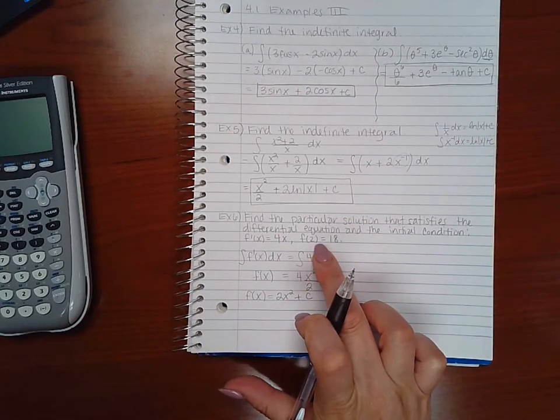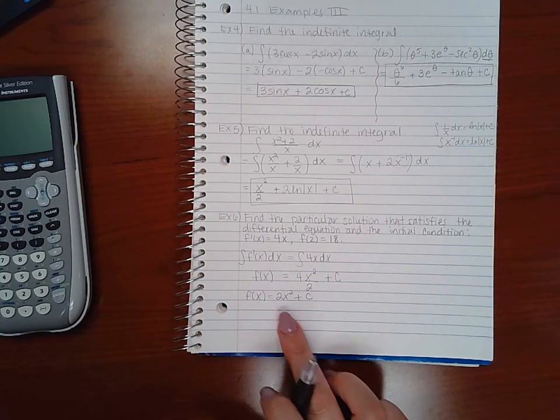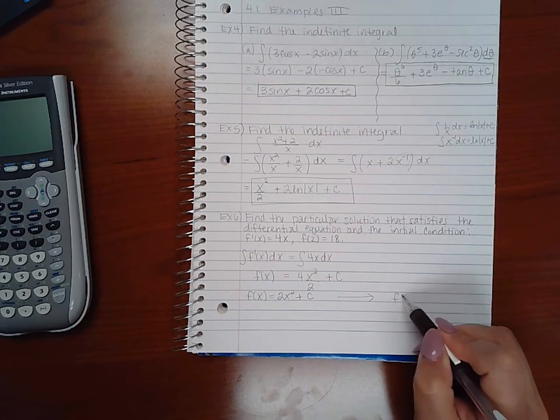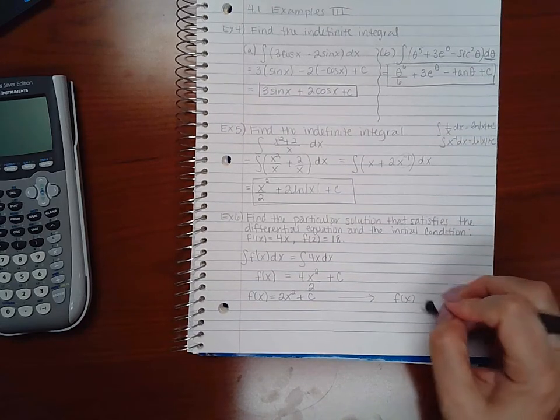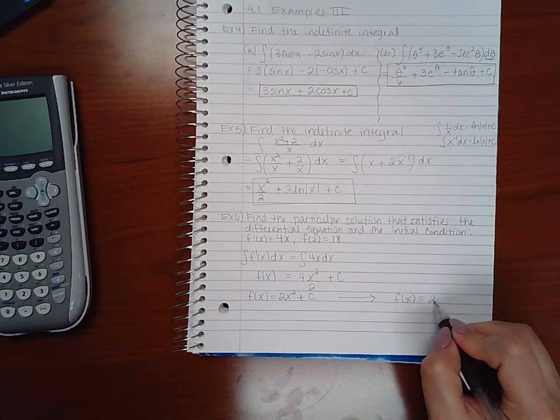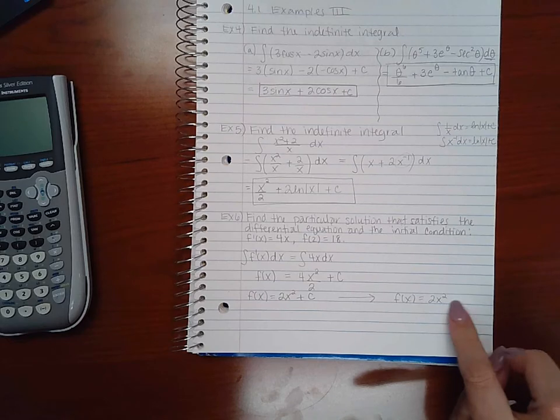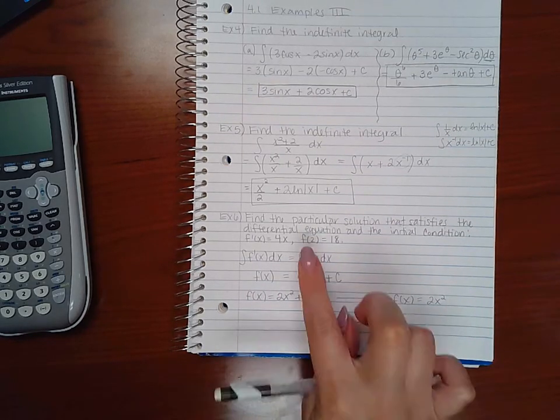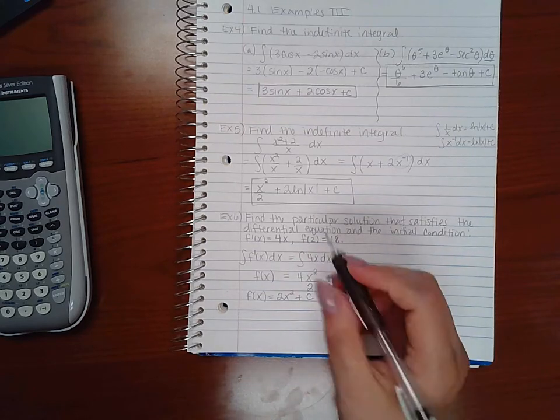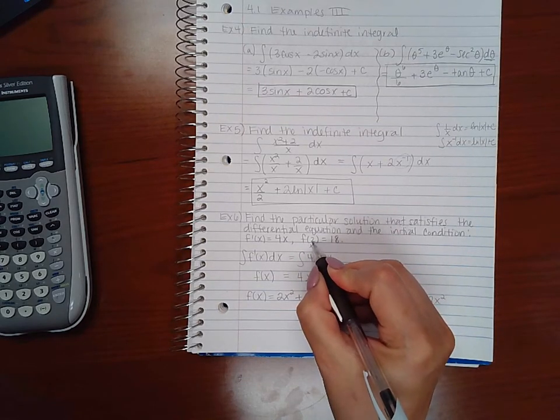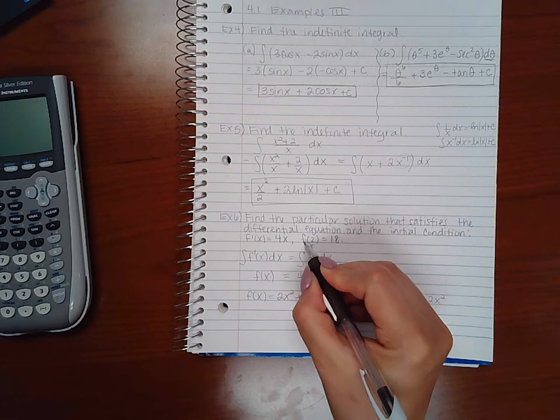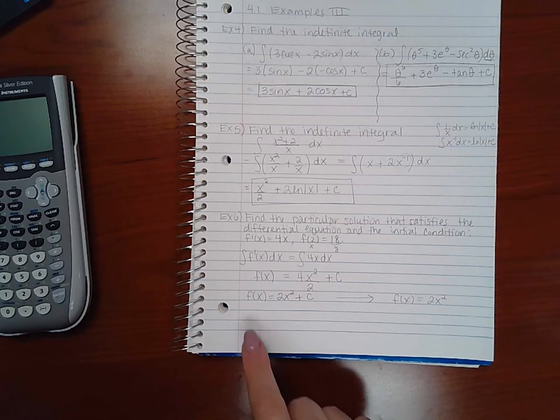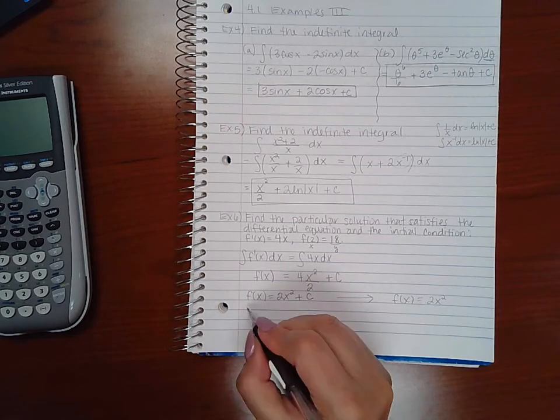Now is where this information is going to come in handy to find that value c. So my final answer will be f of x equals 2x squared. I just don't know what particular constant is going to go here, and that's what I'm about to find out using this information here. Remember, this is an x value inside the parentheses, and f of an x value is a y value. So that is a y value, which means this is my y value that is going to become 18, and my x value is going to become a 2.